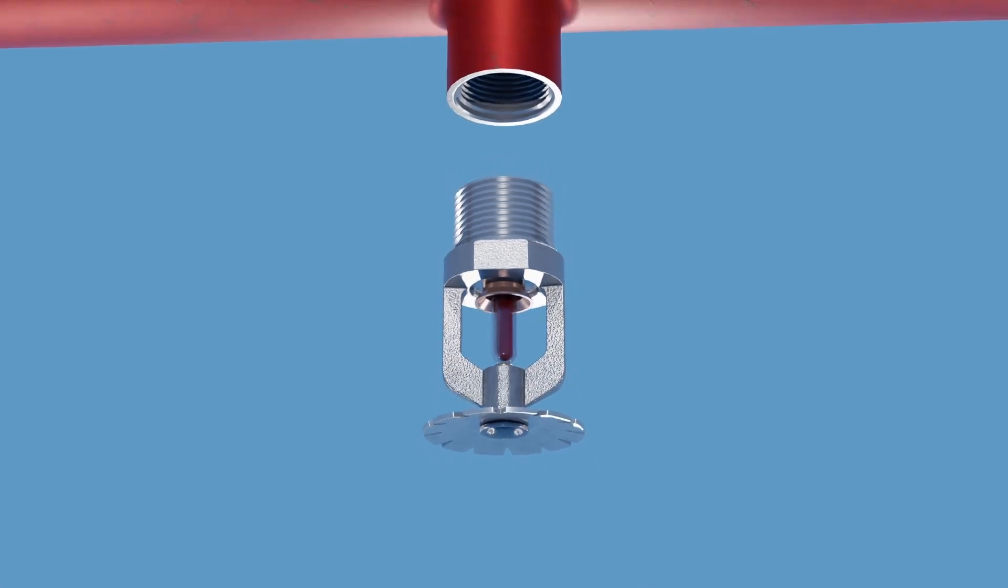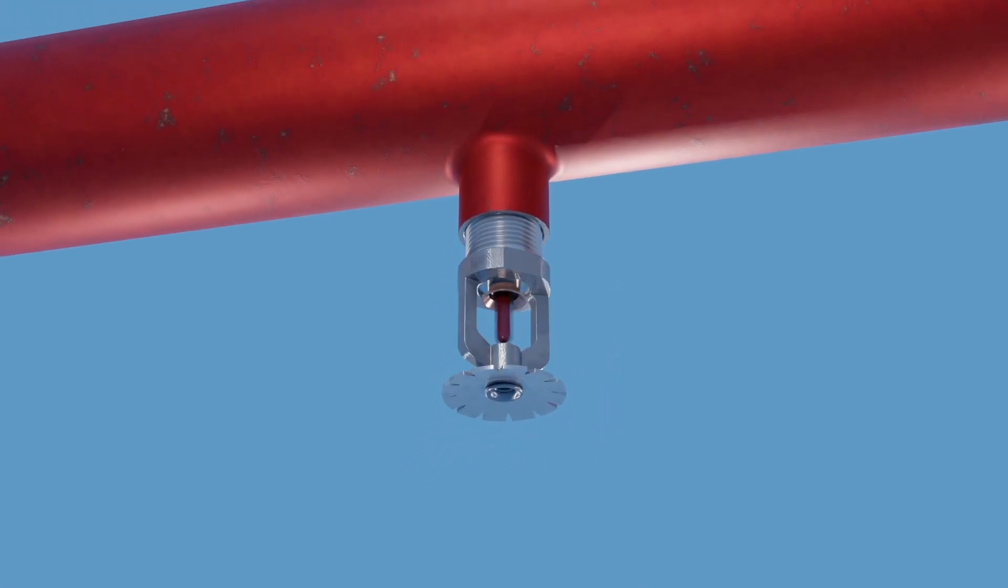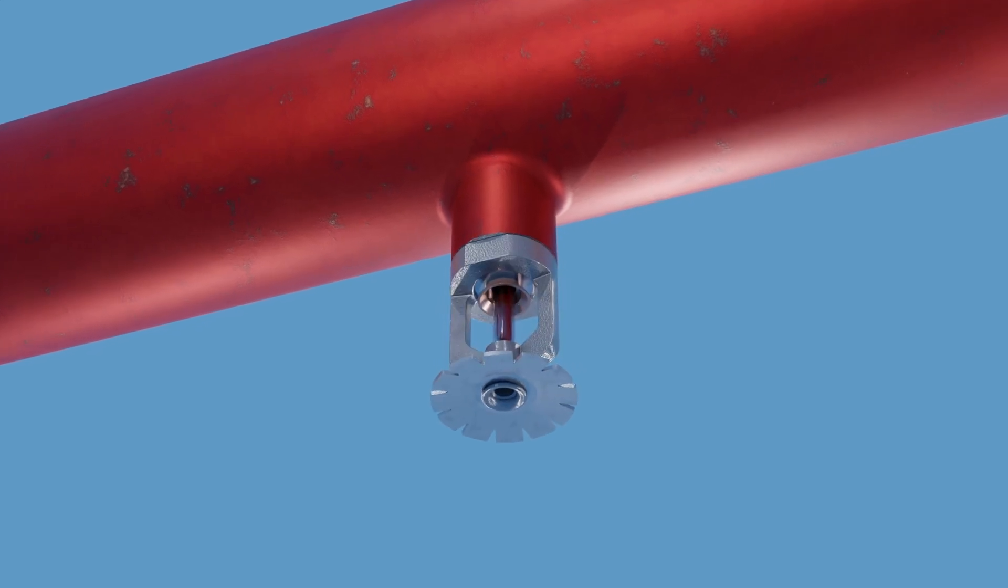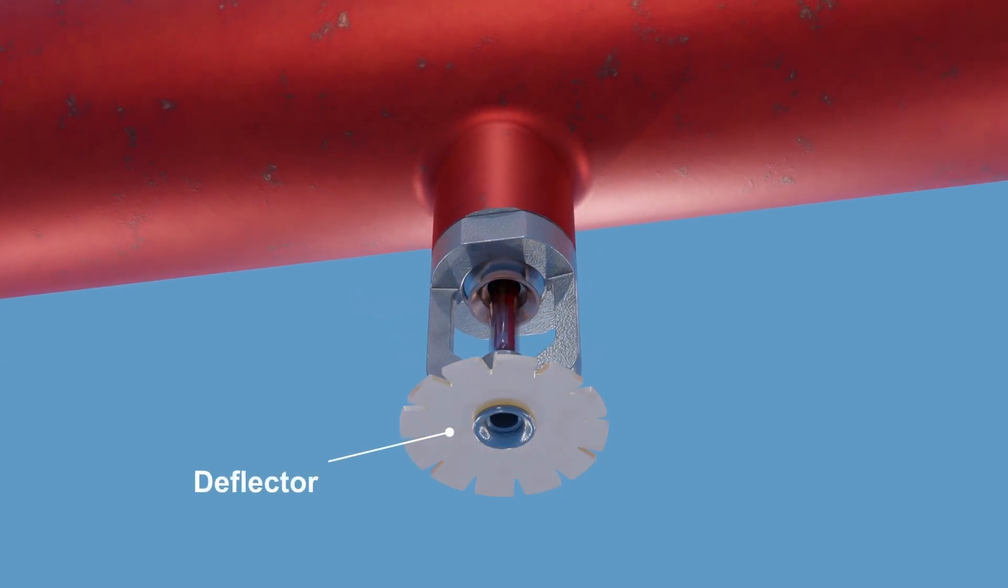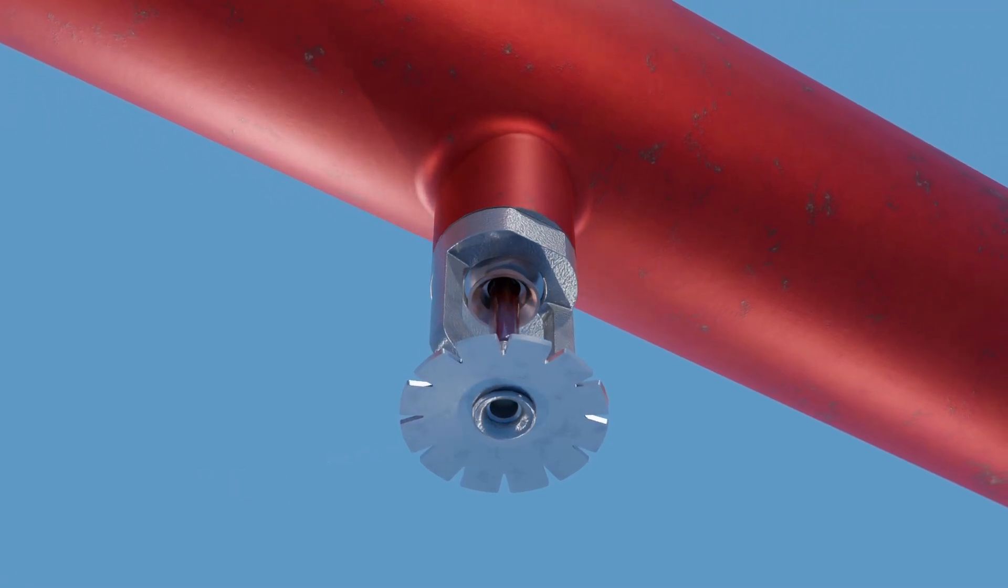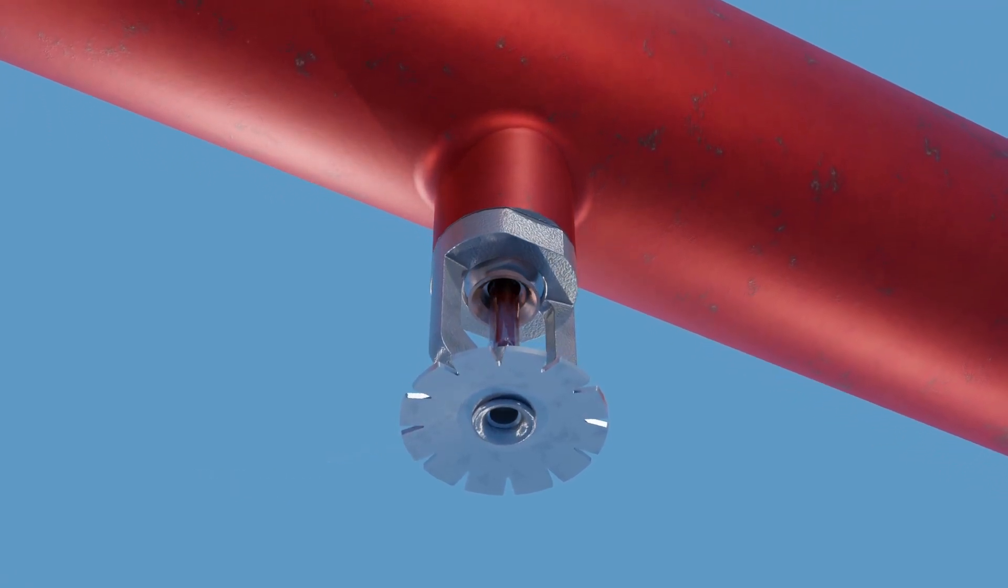Each sprinkler head is strategically placed throughout a building and connected to a network of pipes that supply pressurized water. This is the deflector, a small metal plate at the end of the sprinkler's body. It dispenses the water in a specific spray pattern to maximize coverage.